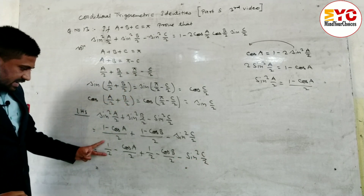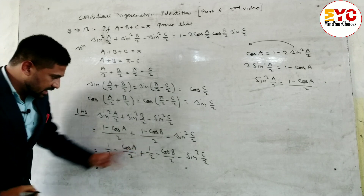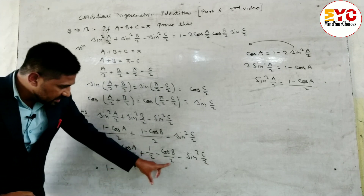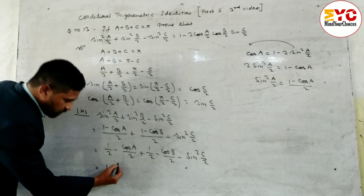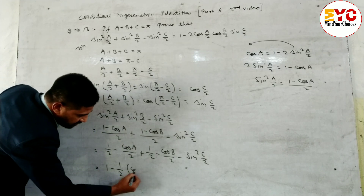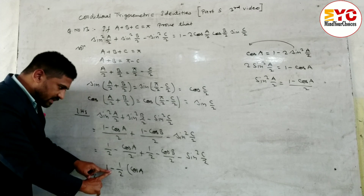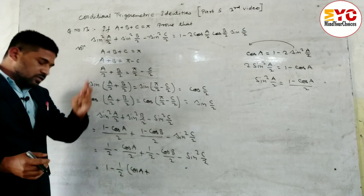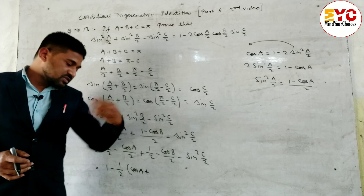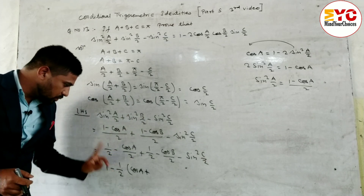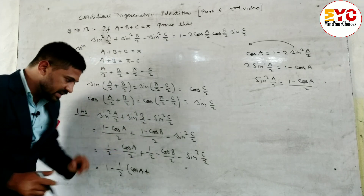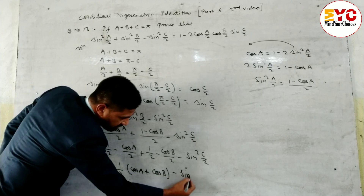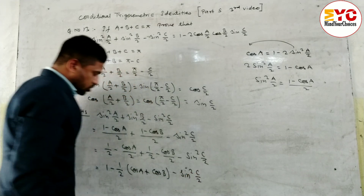Half plus half gives 1. Then we take 1 by 2 common from the cos A and cos B terms. When the minus sign is common, the sign changes: minus cos A becomes plus cos A inside the bracket. So we get 1 minus 1 by 2 times (cos A plus cos B) minus sin square(c by 2).